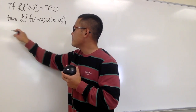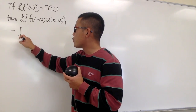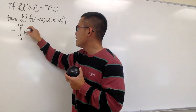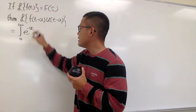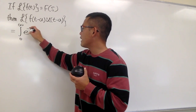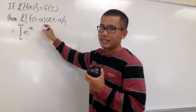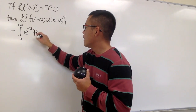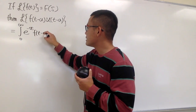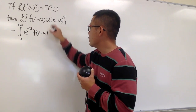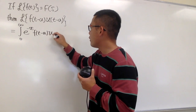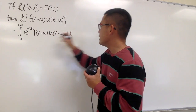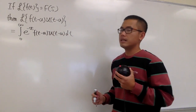This is the same as the integral from 0 to infinity, and we have e to the negative st, and then we have whatever we have inside. So we put down f of t minus a times u of t minus a, dt.